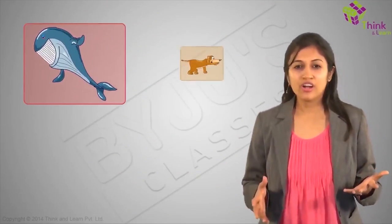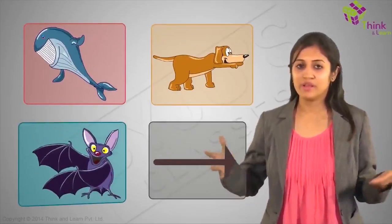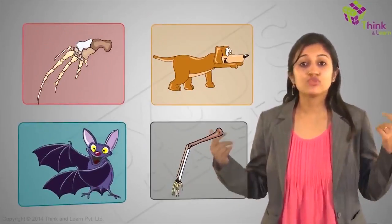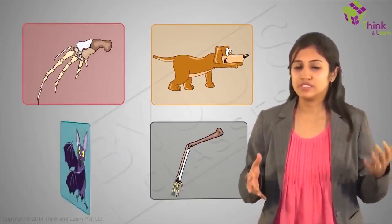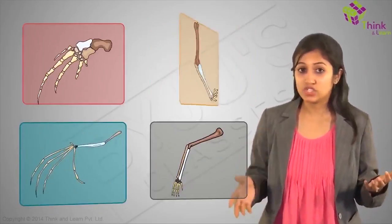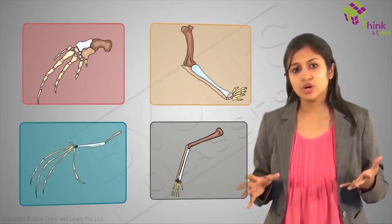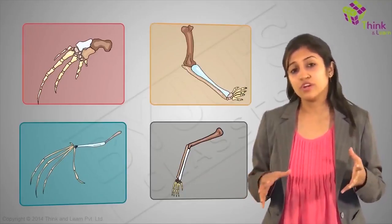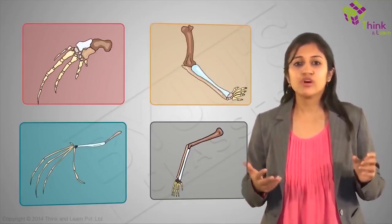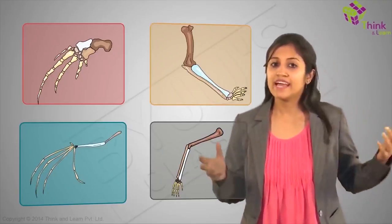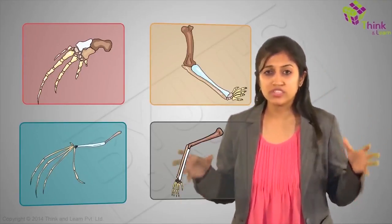A whale, a dog, a bat, and me. A whale like me has two limbs in front of its body — its flippers. So does this bat and this dog. Inside, we all have the same internal structure: one longish bone at the top leading to two thin bones at the joint, followed by a small cluster of bones and then the fingers, or the digits.